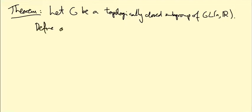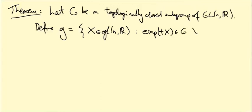Define little g to be the set of matrices X in little gl(n,R) such that exp(tX) is in big G for all real numbers t. In particular, exp(X) is in big G if I just set t equal to 1 in this, but I'm actually requiring exp(tX) is in G for all t in R.